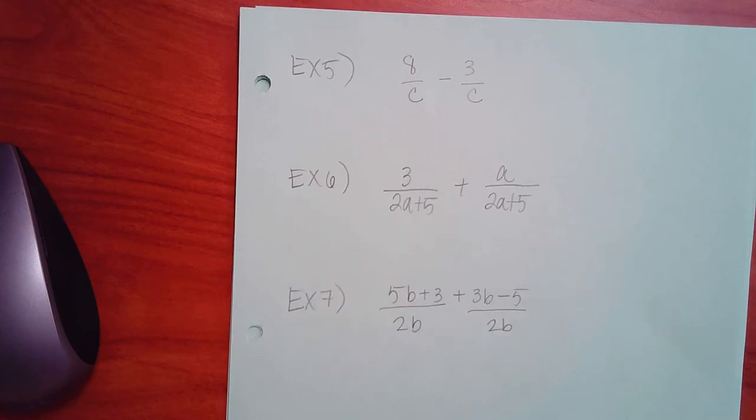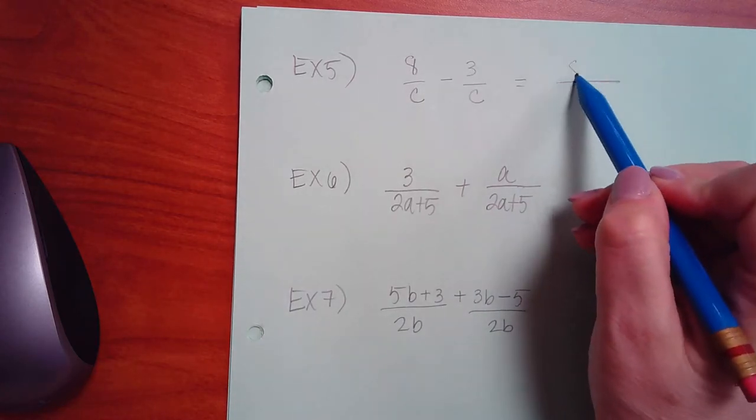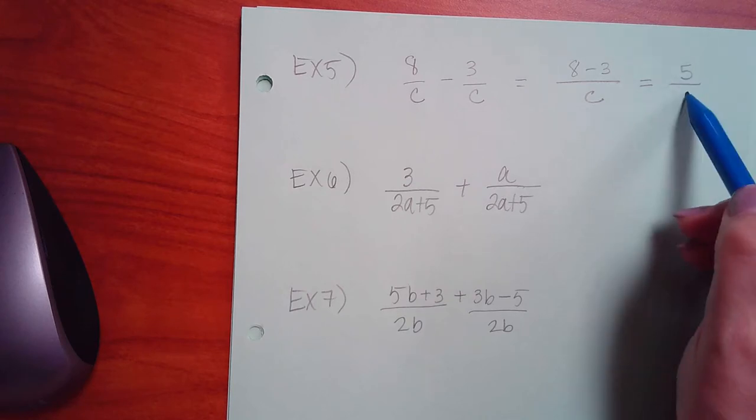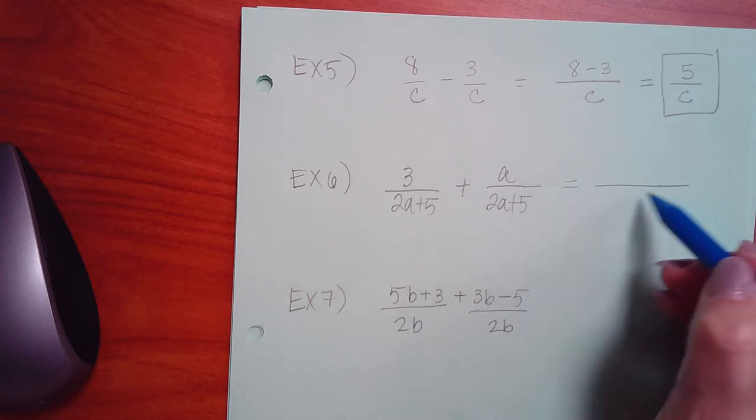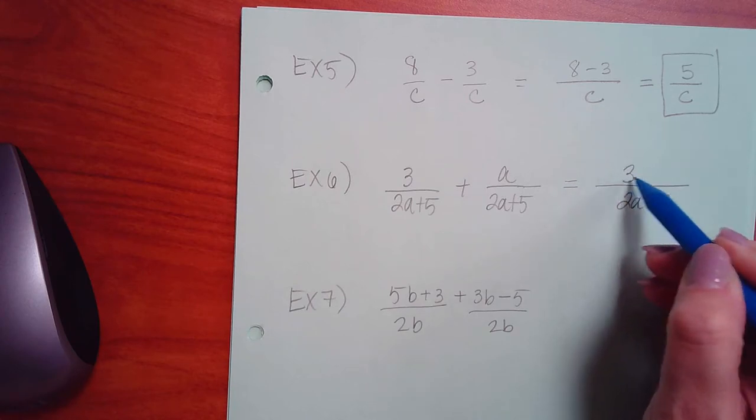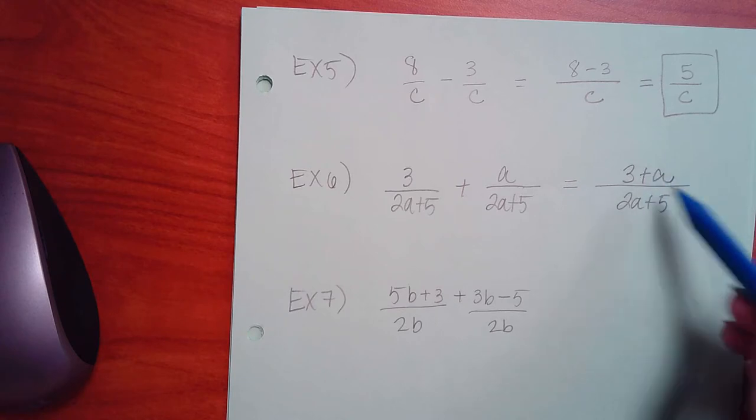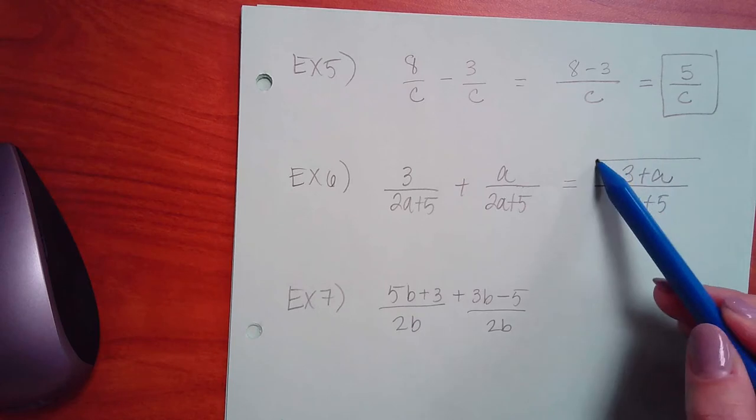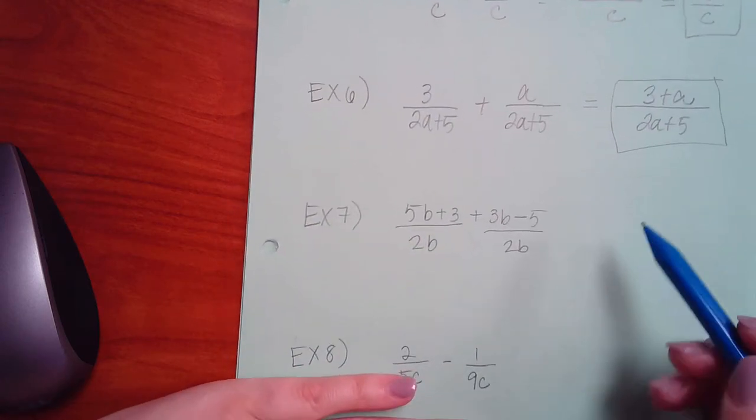When you add fractions or subtract fractions, you should always be keeping the denominator the same and then adding or subtracting the tops. But that can only occur if they have the same denominator already. I'm going to keep my denominator the same and I'm just going to subtract the numerators. So you end up with 5 over C. Here, the same thing. I'm going to keep my denominator the same and I'm just going to add the numerators. And unfortunately, this can't reduce or factor and cancel nothing.